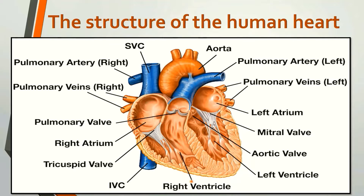There are two arteries called aorta and pulmonary. Aorta starts from the left ventricle while the pulmonary artery starts from the right ventricle. They are having semilunar valves that start from the aorta and pulmonary artery. Superior and inferior venae cavae open to the right atrium, while left and right pulmonary veins open to the left atrium.